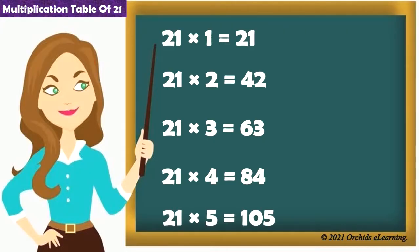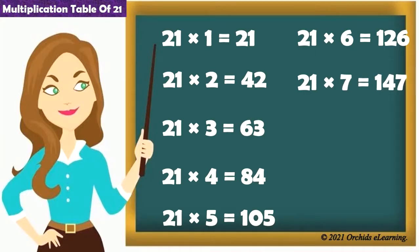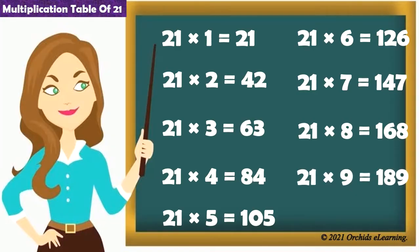21 6s are 126. 21 7s are 147. 21 8s are 168. 21 9s are 189. 21 10s are 210.